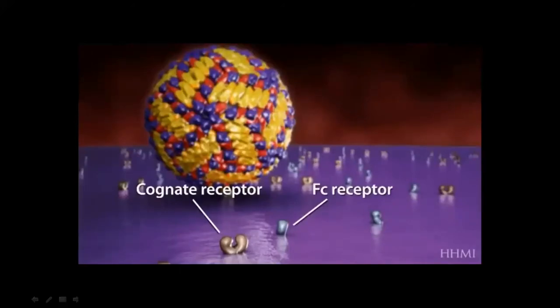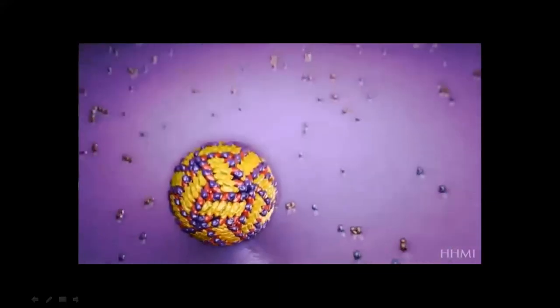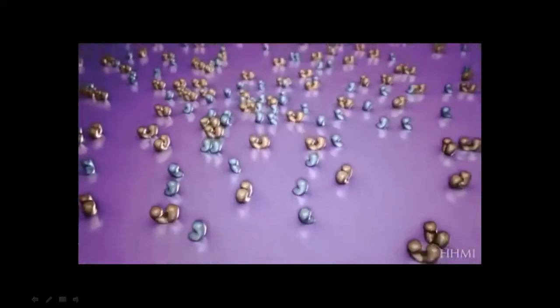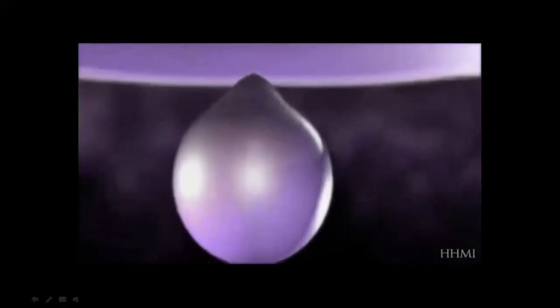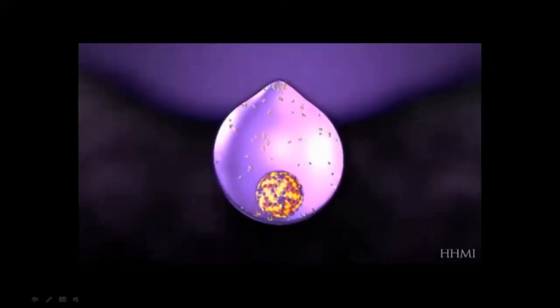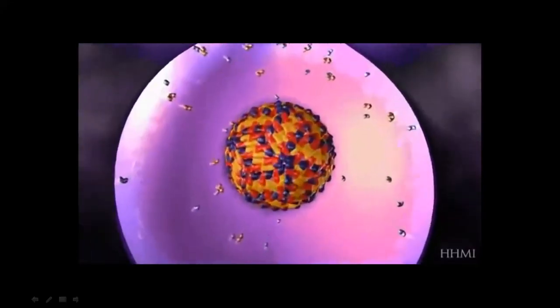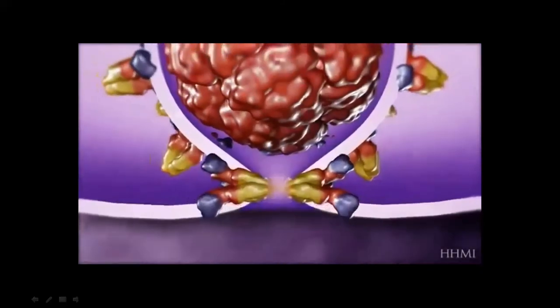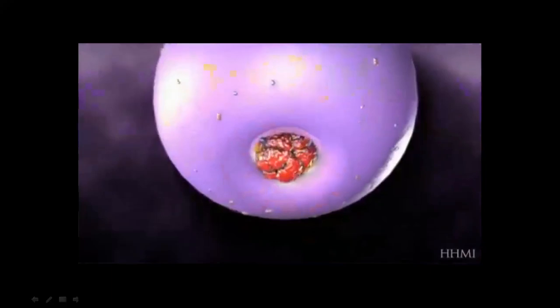The Fc receptor is involved in the antibody-dependent enhancement phenomenon. Once the virus binds to the cognate receptor, it is internalized by receptor-mediated endocytosis. The virus is then present in the endosome and undergoes conformational changes so that the envelope proteins face their hydrophobic spike towards the membrane. These hydrophobic spikes then penetrate the endosome membrane, and fusion of viral membrane and endosome membrane occurs. The capsid breaks apart and viral RNA is released into the cytoplasm, transported to the rough endoplasmic reticulum.